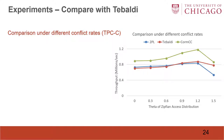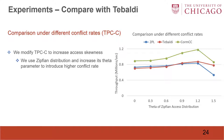Then we compare under different conflict rates. We use a Zipfian distribution and increase its theta parameter to introduce higher conflicts. We can see that in a highly-conflicted workload, Tabeldi can process conflicts better and has higher performance. The two experiments show the trade-off between COMCC and Tabeldi: Tabeldi can process conflicts more efficiently with additional mixed concurrency control overhead, but COMCC tries to mix concurrency control with low overhead.